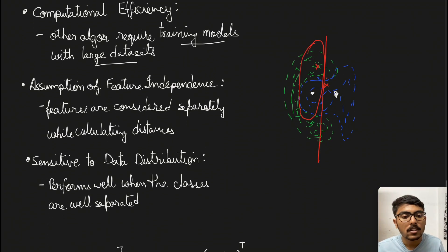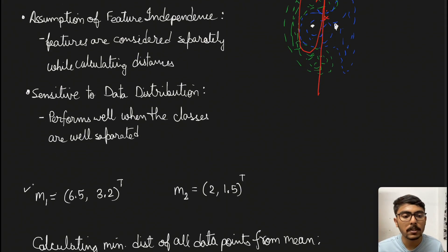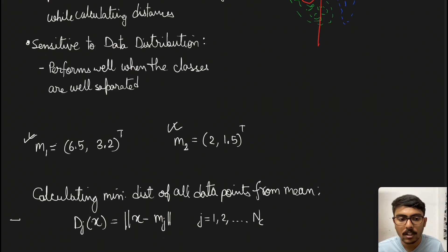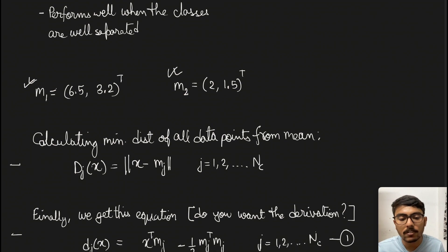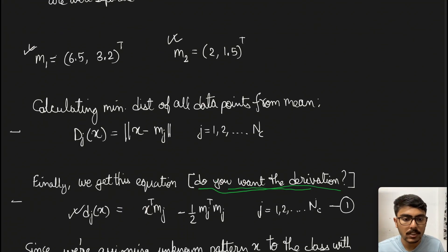Now the actual calculation of how we'll draw the decision boundary. The mean vectors are listed here. First, we'll find minimum distance of all data points from the mean by simple Euclidean norm. Finally, with some calculations and proof, we'll reach this equation. Let me know if you want me to prove this derivation - I'll do it in a separate video to avoid making this video long.